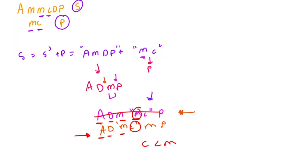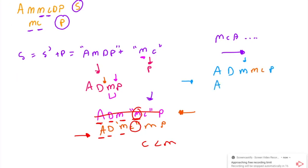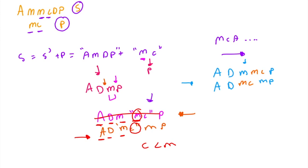If we keep on looping through the array and going through characters, how would we know where to place P? We can just create two candidate strings. Create one string where we have A-D-M, then append M-Z, then append P: A-D-M-M-Z-P. Create another string where we insert M-Z before the M: A-D-M-Z-M-P. With these two strings, all we need to do at the end is compare them, and whichever is lexicographically smaller, print that out. Comparing these two strings, we notice that the second string is lexicographically smaller, so we print out the second string as our answer.